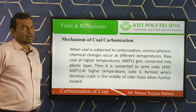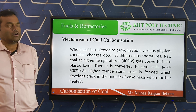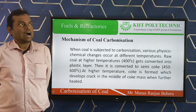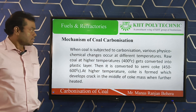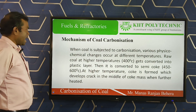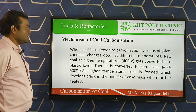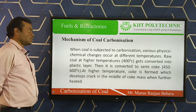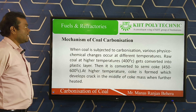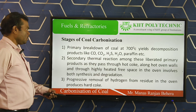At higher temperature, the coke is formed. Initially the moisture is removed, then some other gases are removed. At around 450 degrees centigrade the plastic layer forms, which is very soft. Then, when we increase the temperature to around 600 degrees centigrade, semi-coke is formed — the product of low temperature carbonization. After further heating at higher temperature, we get the final product called coke.